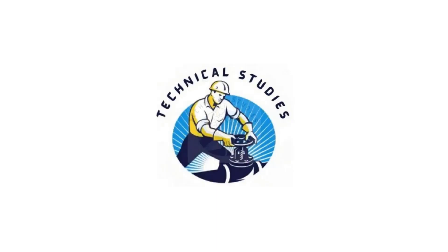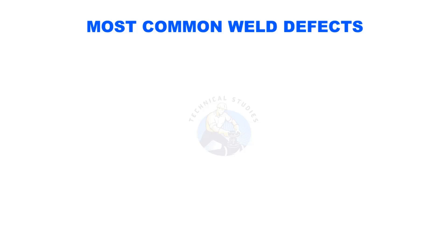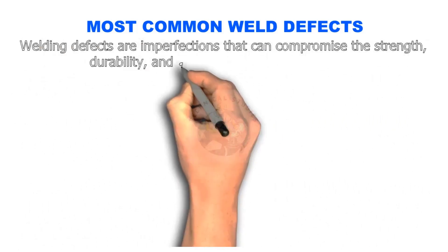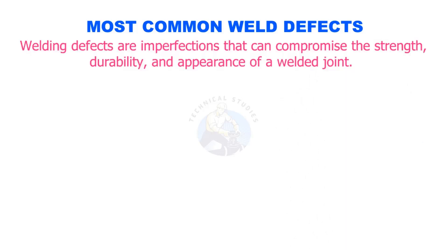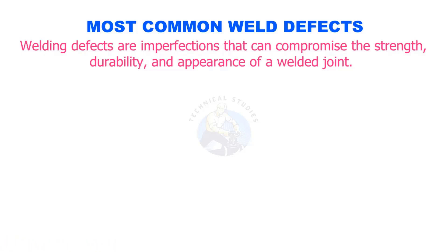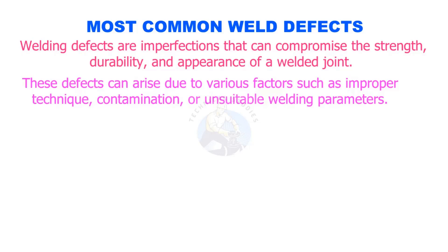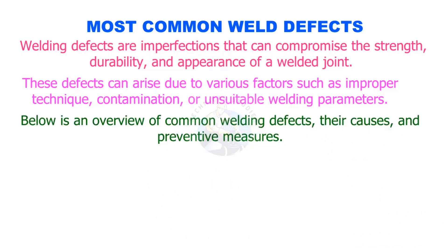Welcome to the technical studies. In this video, we will discuss the common types of weld defects, causes of weld defects, and preventing methods. Welding defects are imperfections that can compromise the strength, durability, and appearance of a welded joint. These defects can arise due to various factors such as improper technique, contamination, or unsuitable welding parameters. Below is an overview of common welding defects, their causes, and preventive measures.